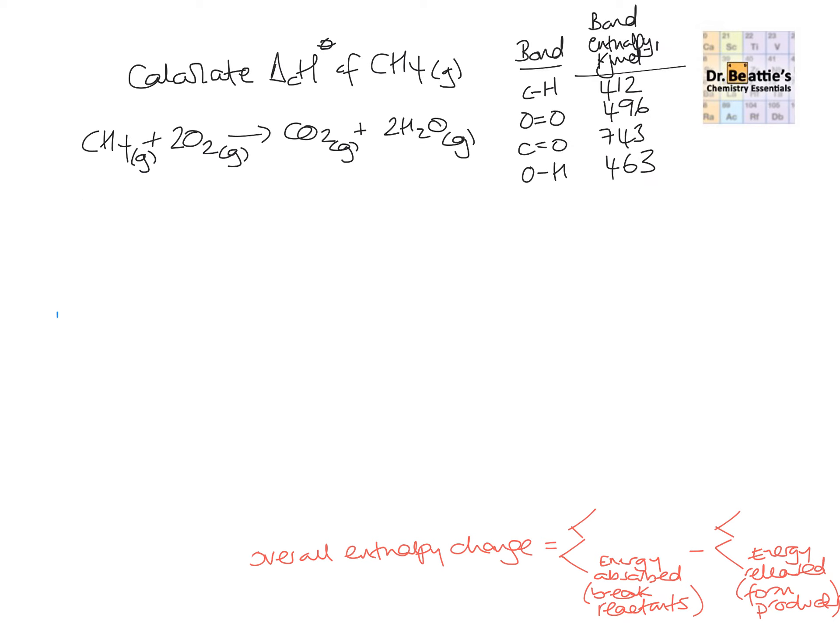If we were to take this question here, where we're asked to work out the enthalpy change of combustion for methane, we would be given or asked to construct a balanced symbol equation. And we would be given the average bond enthalpies for the different types of bonds that we would need in our reactants and our products undergoing combustion of methane. Now, unless you're incredibly skilled and can picture the bonds in the structural formula without writing it down, I would recommend, especially first starting out, that you write the structural formula of all the chemicals in the equations for step one.